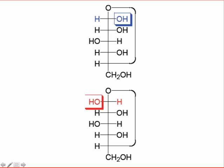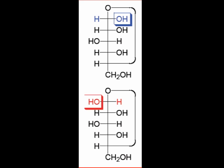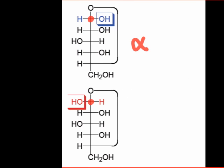Let's examine Fischer projections of the two anomers of D-glucose. Immediately, it becomes apparent that the only difference between the anomers is the configuration of the former carbonyl carbon. We distinguish the anomers by calling one alpha and one beta.